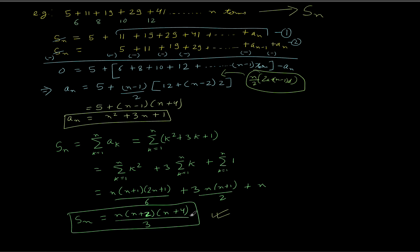This is a very beautiful example where we made use of many different facts. At the very beginning we used the key observation about the differences forming an AP, which led us to this line of thinking. This may seem very difficult the first time you solve it — like, how do I think of these innovative approaches? But these things will come with practice. Once you've done this kind of problem, the next time you see something similar, you can simply try this approach and solve it.